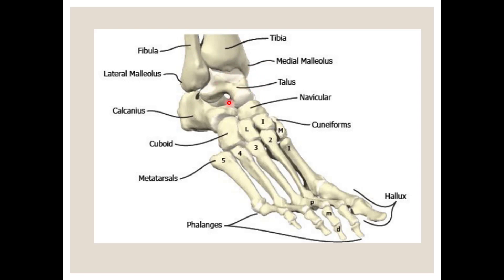The talus bone is here. Behind it is the heel bone, called the calcaneum or calcaneus, which is the biggest bone of the foot. Anterior to the talus is the navicular bone, and anterior to the calcaneum is the cuboid bone. Medial to the cuboid bone there are three small bones called the cuneiform bones: medial cuneiform on the medial side, intermediate or middle cuneiform in the middle, and lateral cuneiform on the lateral side.